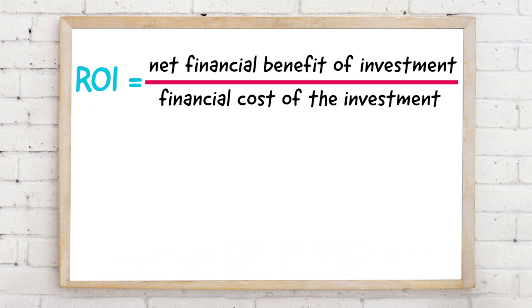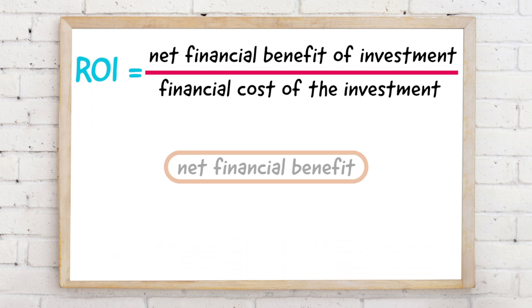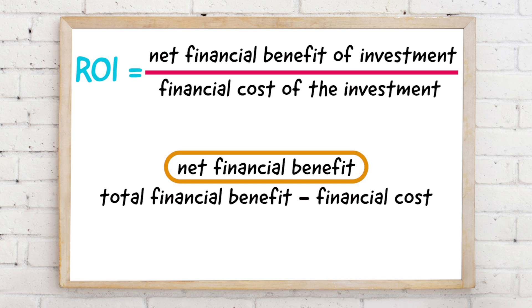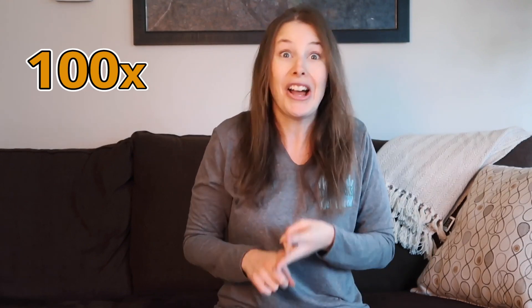ROI is calculated like this: you take the net financial benefit of the investment and divide it by the financial cost of the investment. The net financial benefit means you take the total financial benefit and subtract the cost. With this calculation you'll learn whether your investment is going to 2x, 6x, or 100x itself.